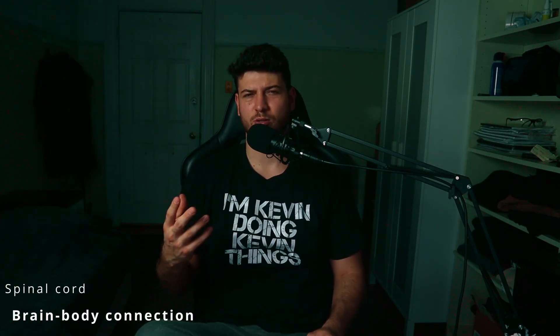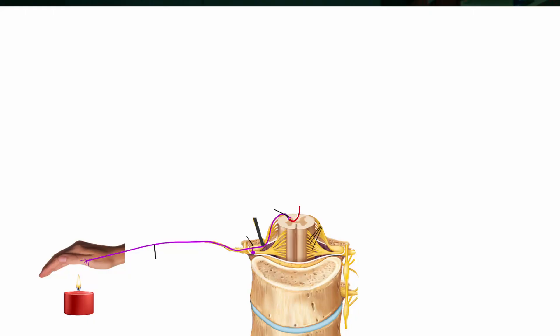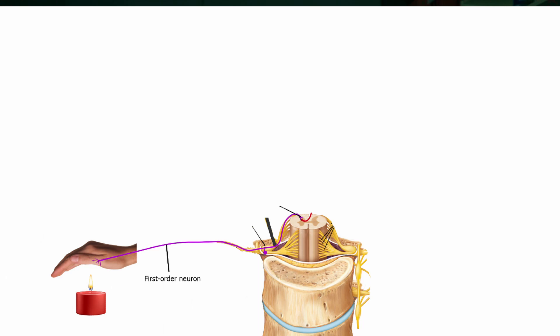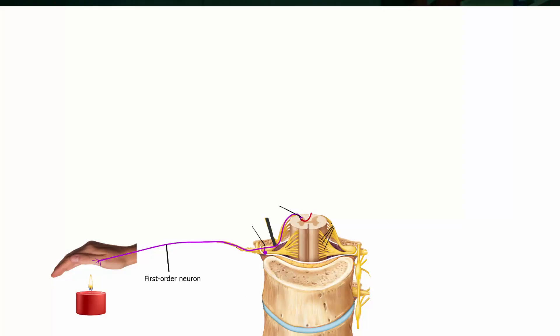Now let's talk about the spinal cord. It basically connects your brain with the lower parts of your body and can also control some reflexes. How does information from your hand travel to your brain? First, you need a stimulus — in this example, high temperature. Let's say you hold your finger just above a candle. The information will be recorded and passed to the spinal cord by the first-order neuron, which goes from your finger directly to your spinal cord — first to the dorsal root ganglion where it has its cell body, then to the dorsal root and into the dorsal horn.